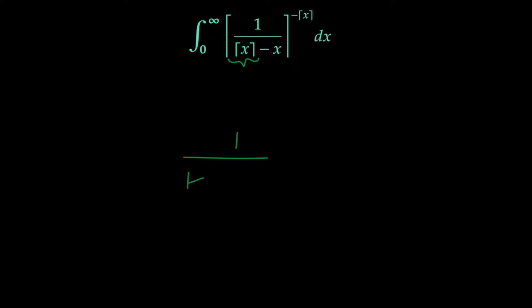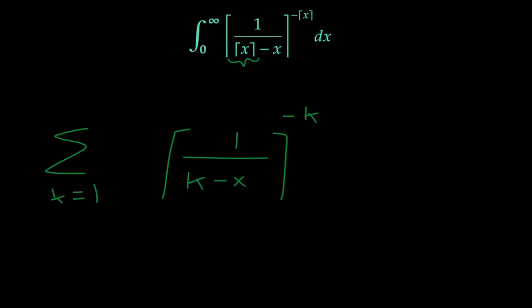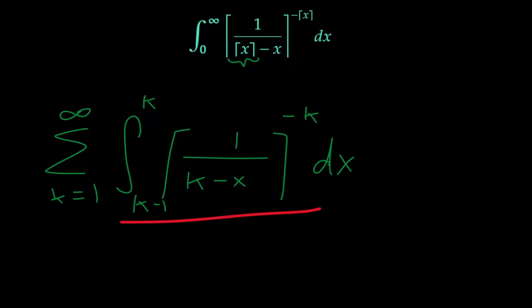So we have 1 over k minus x, and then we still have the ceiling here but raised to the negative k power. Then we just add each of these up, letting k range from 1 to infinity. Our integral, since we're integrating from 0 to infinity, we can say it's just from k minus 1 all the way up to k, then dx. So we're integrating this function over many intervals.